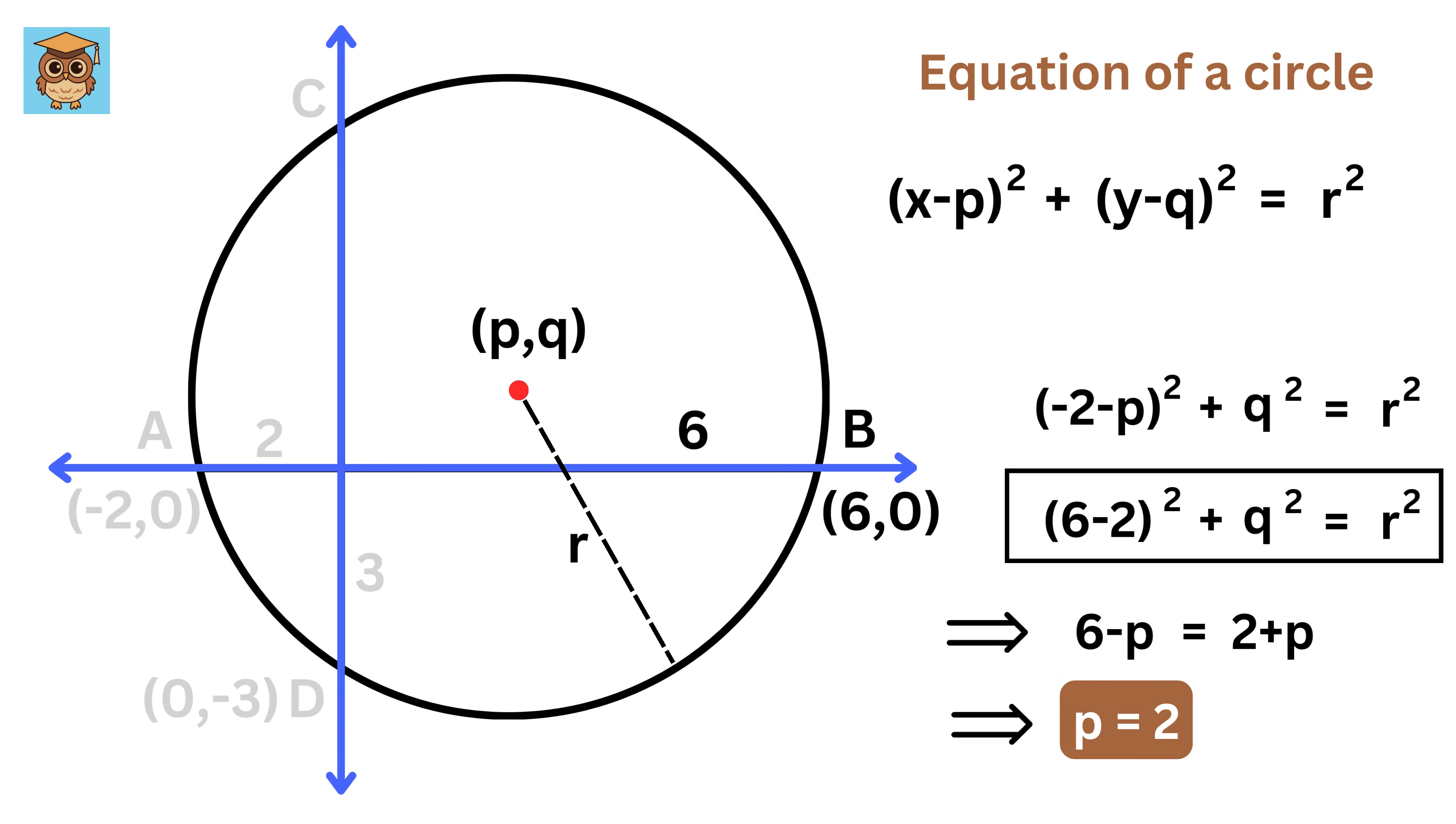With p equals 2, we plug it back into the formula for the circle to get another equation: 4 squared plus q squared equals r squared.